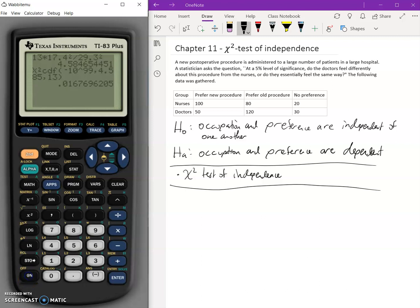We will be going up to this option that says matrix. So you're going to press the second button. And above the x to the negative one, there's matrix. Press that. Now you have all these names that give you names of all the matrices we're going to use. We don't need that. We're going to go to the right. We don't need the math, but we need to go to edit. So we're going to edit this matrix.